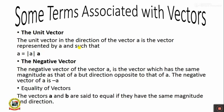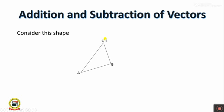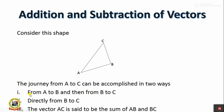Two vectors A and B are said to be equal if they have the same magnitude and direction. Now, for addition and subtraction of vectors, look at this triangle A, B, C. The journey from point A to point C can be achieved in two ways: first, travel from point A to point B and from point B to point C; or journey from point A to point C directly. Moving from A to C has the same effect as moving from A to B and then B to C using vector formats.